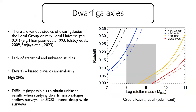There have been various studies of dwarf galaxies in the Local Group or very local universe, but due to observational biases, not so much outside these regions. The main evolutionary pathways for the different morphologies of dwarfs are not well understood, due to the lack of statistical and unbiased results. Dwarfs in shallow surveys like SDSS are biased toward anomalously high star formation rates, which makes it difficult to obtain unbiased morphological results.